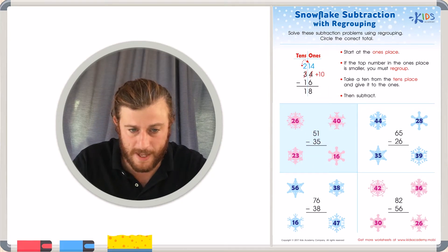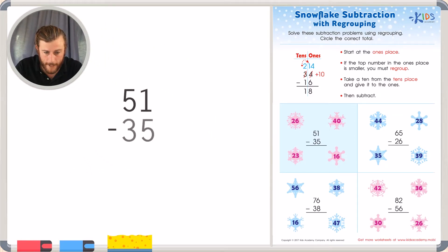The first problem has us subtracting 51 minus 35. So let's use our steps. Start at the ones place. The 1 is smaller than the 5, so we're going to have to take a 10 away from the 5. Now the 5 in the tens place really represents 50. So when we take 1 ten away from it, it becomes 4 which really stands for 40. And we can add plus 10 to the ones place and the 1 becomes an 11.